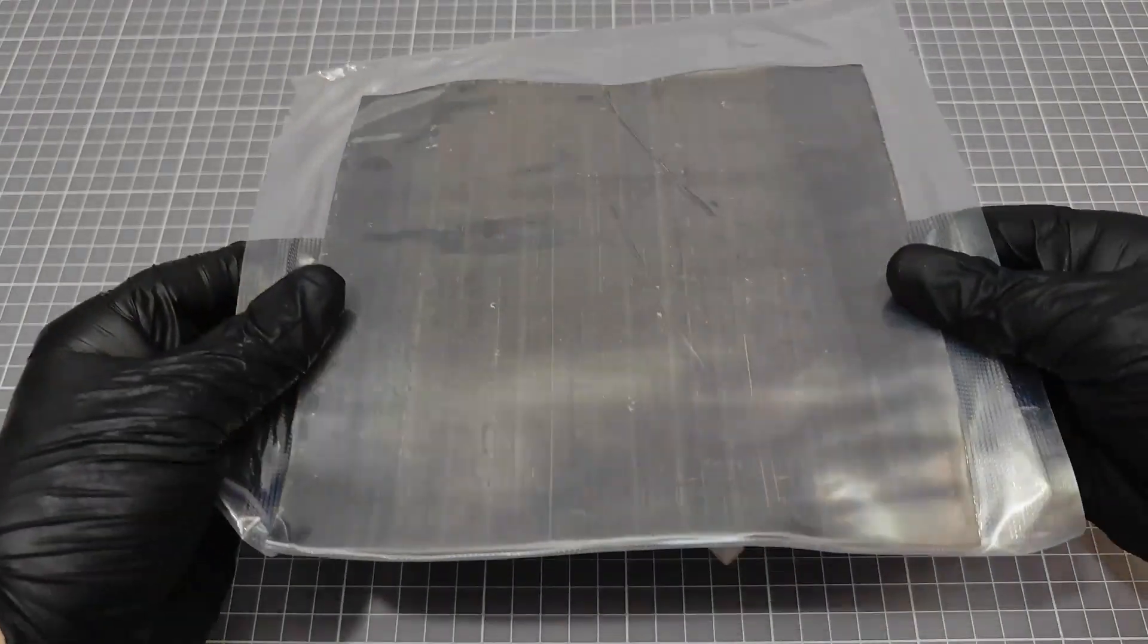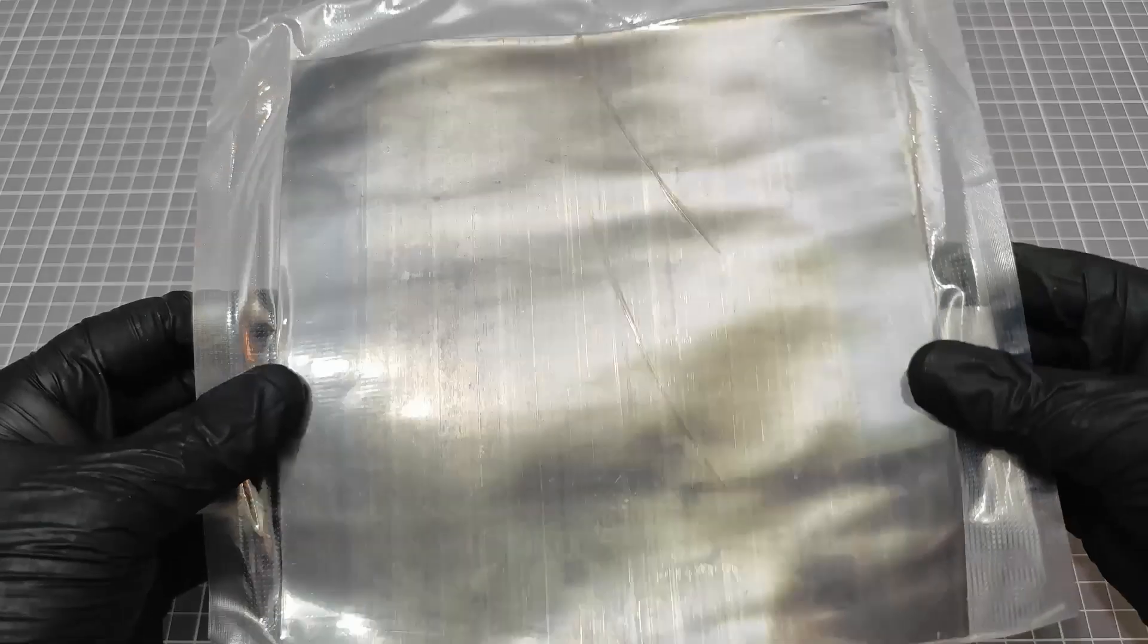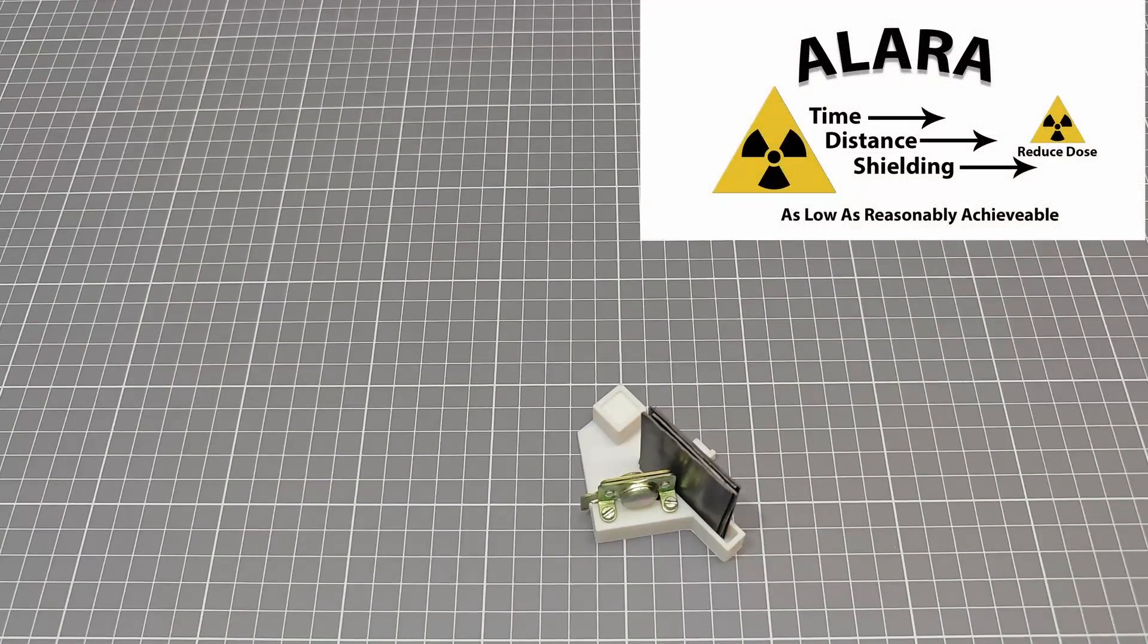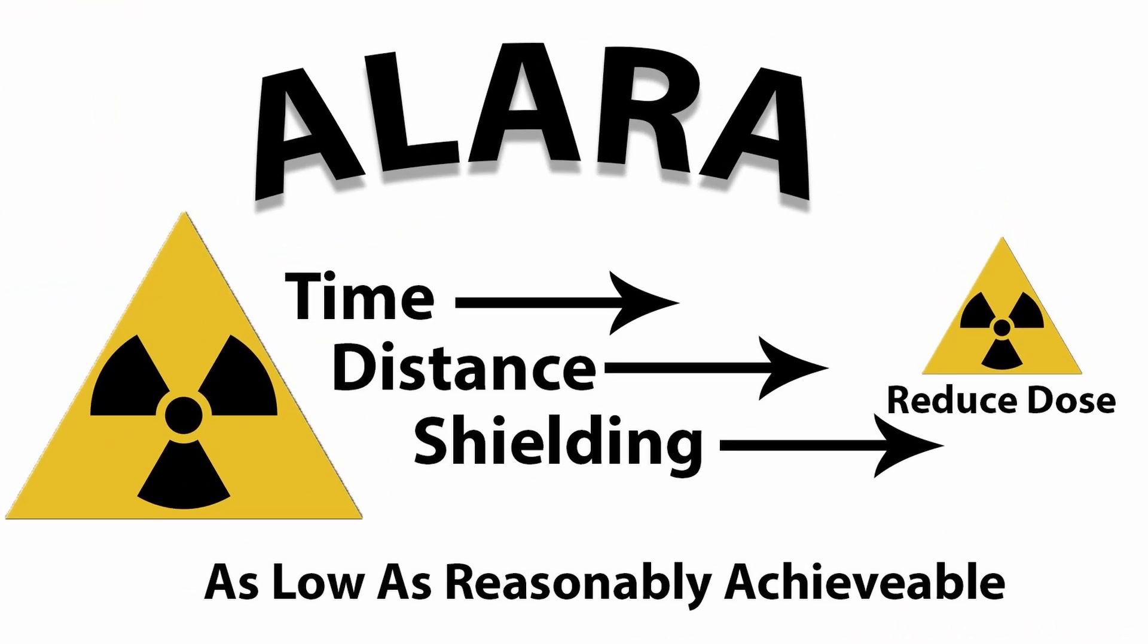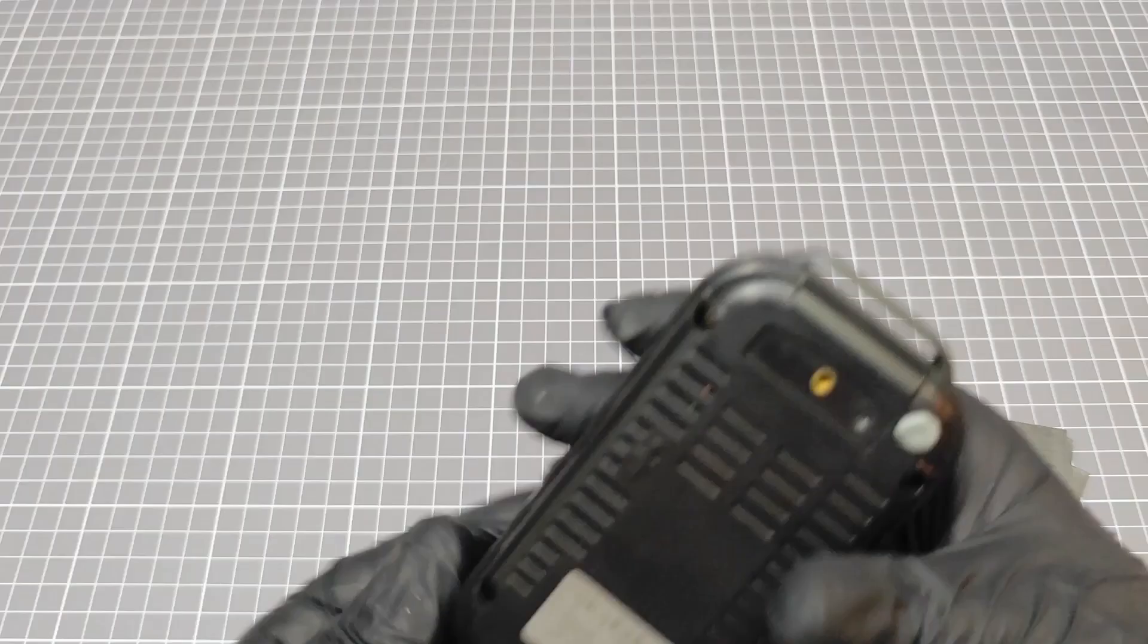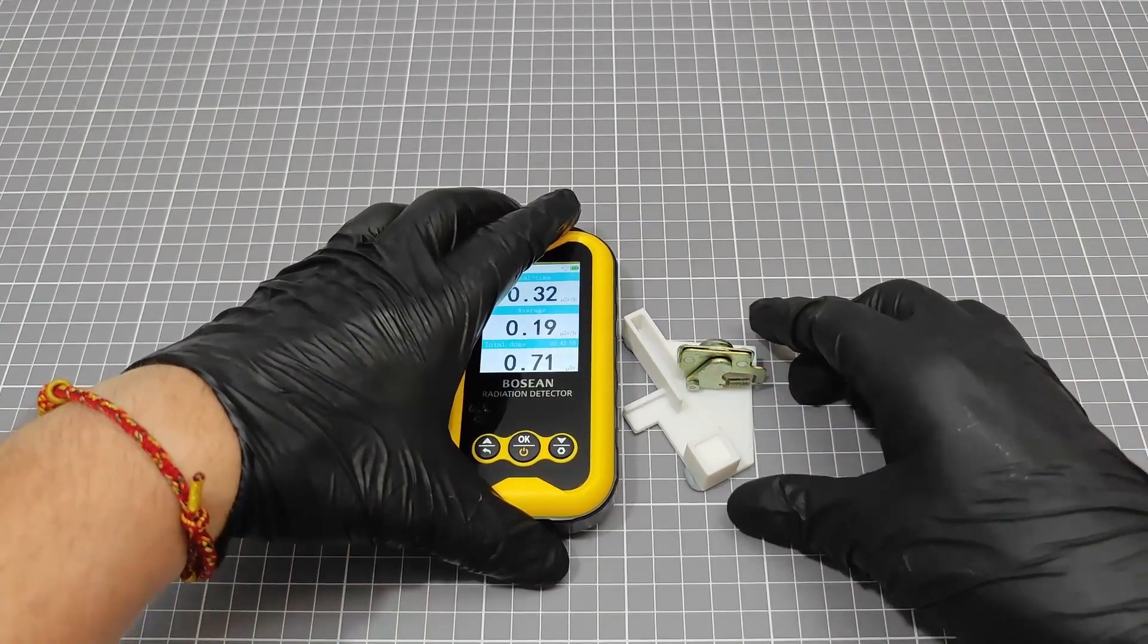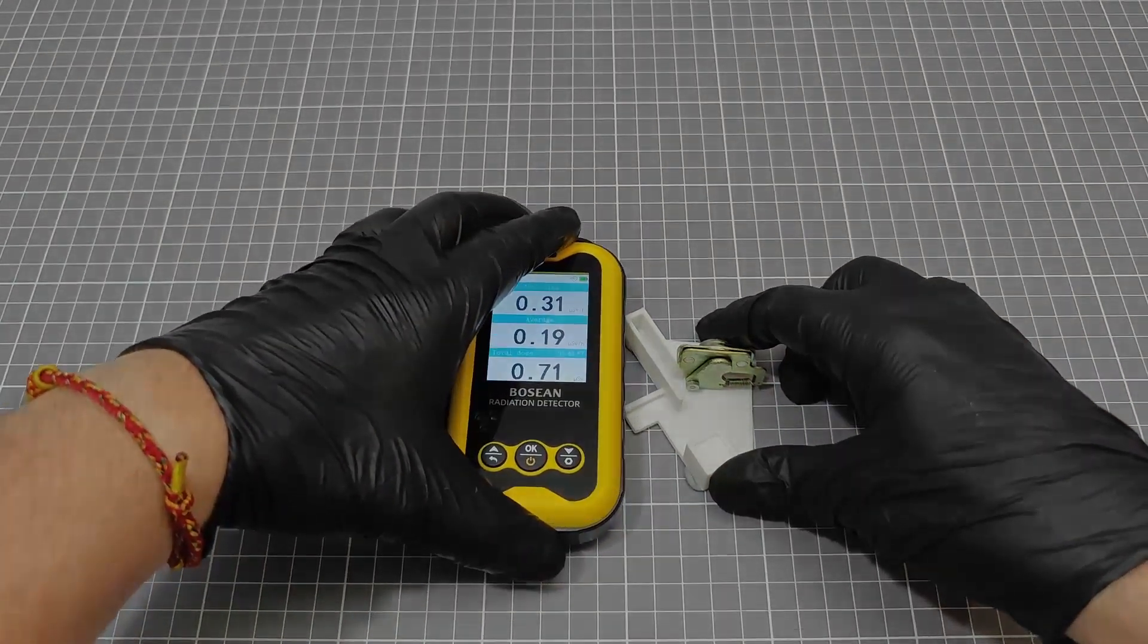And we also have a sheet of lead placed in front of the experiment, just for good measure. With small sources like this though, distance is always the best shielding. We're using the highly scientific method of fixing everything in place using BluTac. Let's get on and run this experiment.